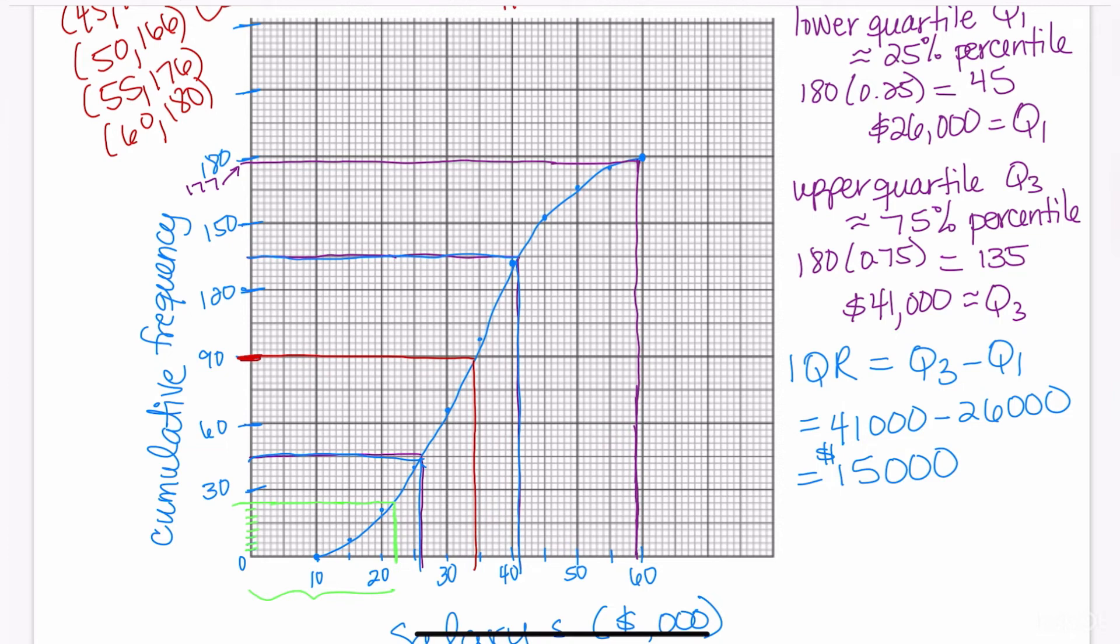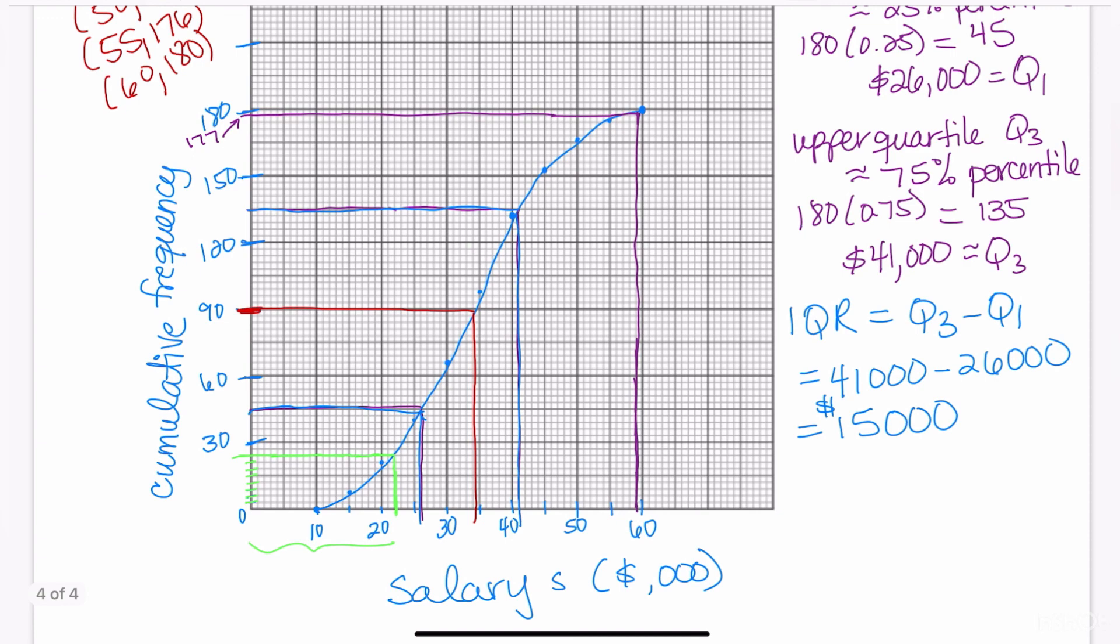Basically, on a cumulative frequency curve, you can find any percentile. You should be able to find any quartile, the median, and answer any type of question that they ask. So I just wanted to run this by you to make sure that you understood how to figure out the IQR using a cumulative frequency curve.